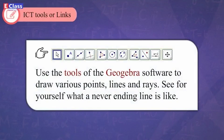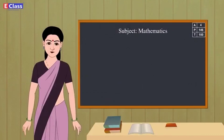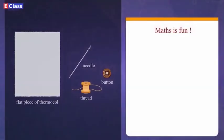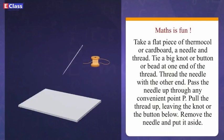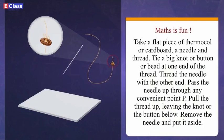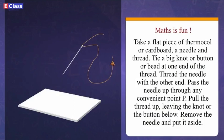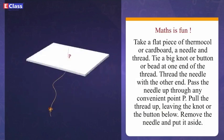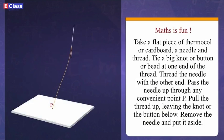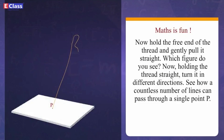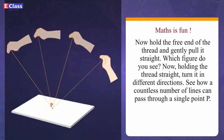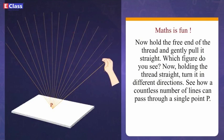Use the tools of GeoGebra software to draw various points, lines, and rays. See for yourself what a never-ending line is like. Maths is fun: take a flat piece of thermocol or cardboard, a needle, and thread. Tie a big knot or button at one end of the thread, thread the needle with the other end, and pass the needle up through any convenient point P. Pull the thread up leaving the knot below, remove the needle. Now hold the free end of the thread and gently pull it straight — which figure do you see? Holding the thread straight, turn it in different directions to see how a countless number of lines can pass through a single point.